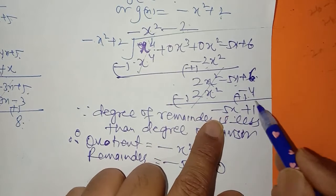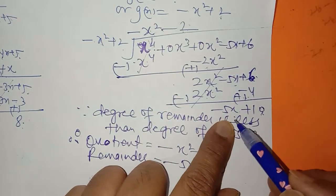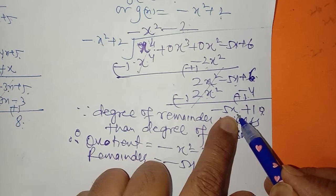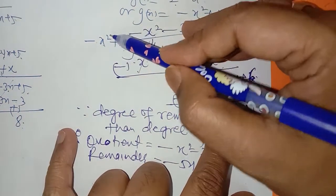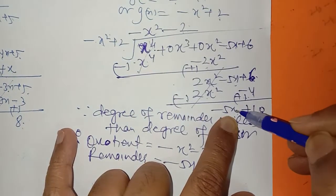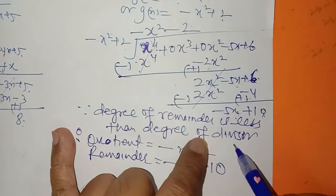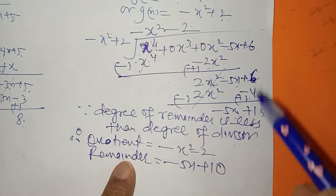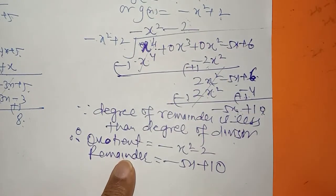5x remains as it is. Now we call this the remainder. Why is it the remainder? Because the degree of the divisor is 2, and the degree of this remaining term is 1, which is smaller. Therefore minus 5x plus 10 will be the remainder. So the quotient is this, and the remainder is this.